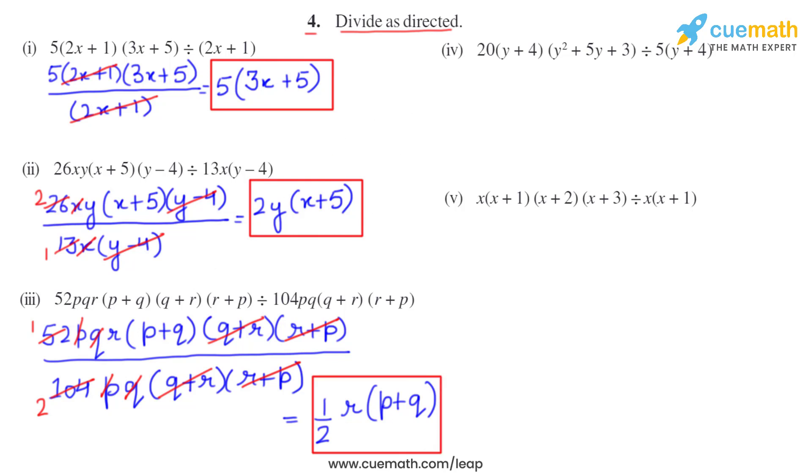So this is the final answer for the third part. Let's do the fourth one now. In the fourth one: 20(y+4)(y²+5y+3) divided by 5(y+4).